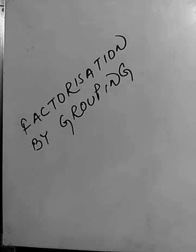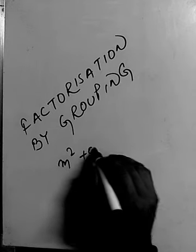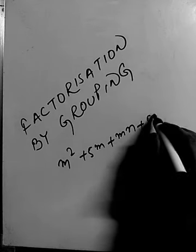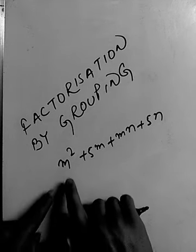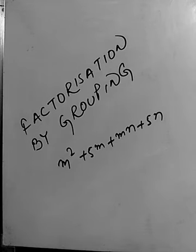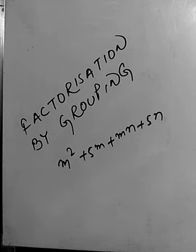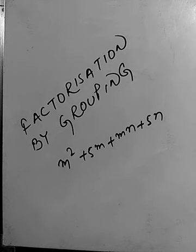Hello students, welcome back to our class. Today we'll be studying factorization by grouping. I'll give you one example: m squared plus 5m plus mn plus 5n. This is the given algebraic expression, a polynomial. After observation, from all four terms we do not have any common factor. In this kind of situation, we are going to make groups consisting of the terms.